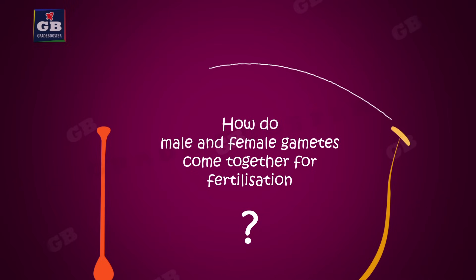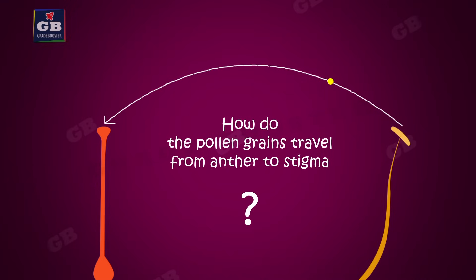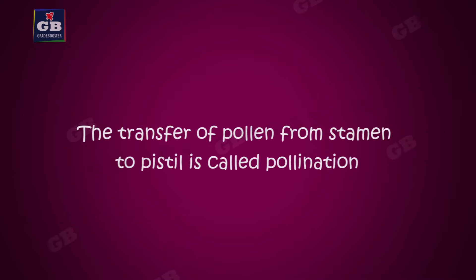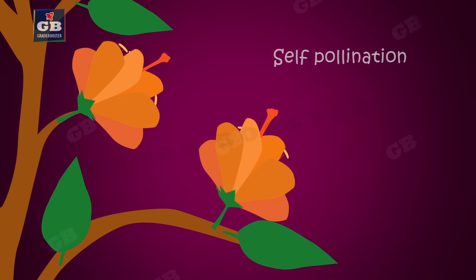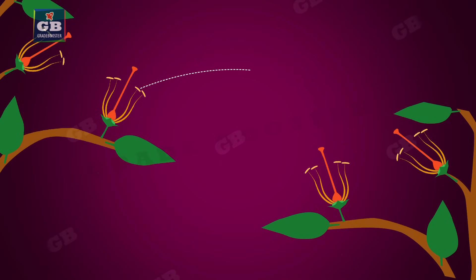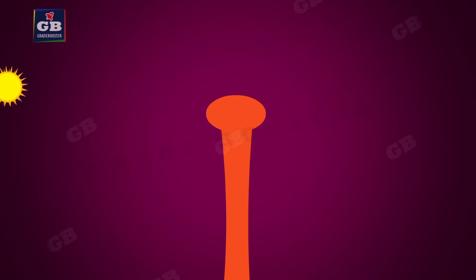The male gametes should reach the female gametes. But how do the pollen grains travel from anther to stigma? They travel from anther to stigma with the help of air, water, insects, birds, and other animals. The transfer of pollen from stamen to pistil is called pollination. If it occurs in the same flower or between flowers of the same plant, it is called self-pollination. If pollination takes place between two flowers of different plants, it is called cross-pollination.